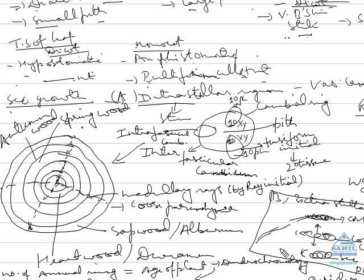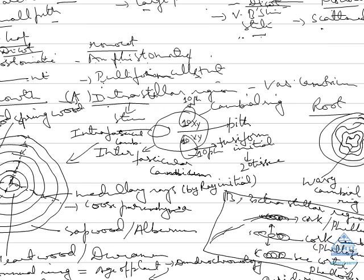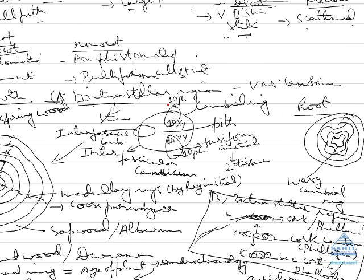Now lastly, coming to the secondary growth. In secondary growth, we are having two types: intrafascicular region and second in extrafascicular region. In intrafascicular region it is given by vascular cambium, as in stem, where first of all cambium ring is formed due to the activity of intrafascicular and interfascicular vascular cambium.